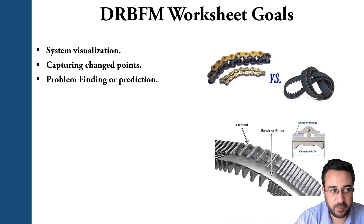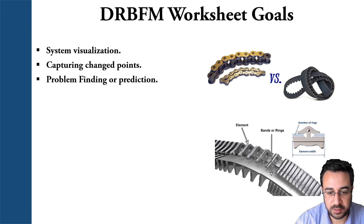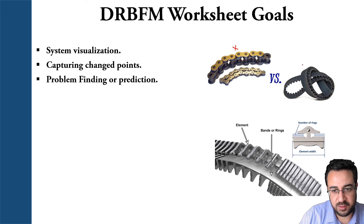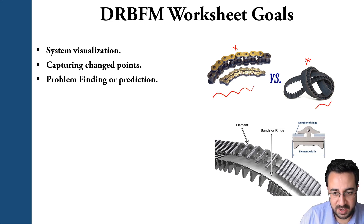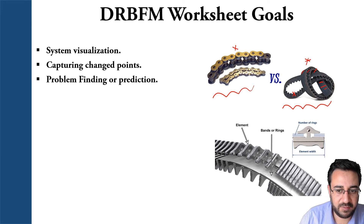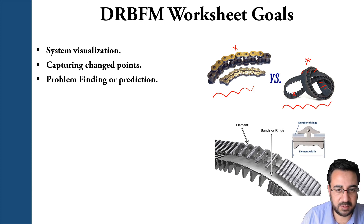The goals for the DRBFM worksheets: firstly, your worksheet should clearly visualize all parts, sub-parts, assemblies, and sub-assemblies. While doing the visualization, you want to show the old and new design — for example, going from a chain to a rubber belt, showing how the old chain looked and how the new proposed rubber belt looks. Then you take the details, go through all those concerns with your experts, and capture the change points using tables, matrices, and cross-functions.